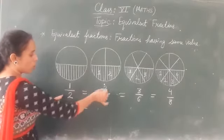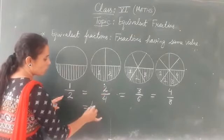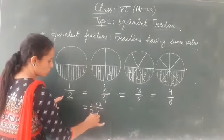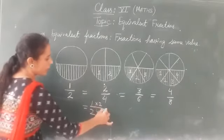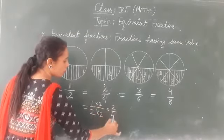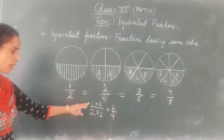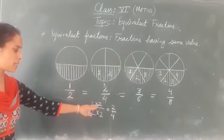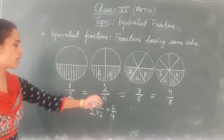Like how we got this fraction. This 1 by 2, when you multiply by 2, then you get 2 by 4. So it means its numerator and denominator is multiplied by the same number 2. Then we are getting its equivalent fraction.